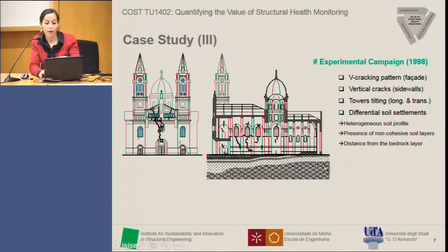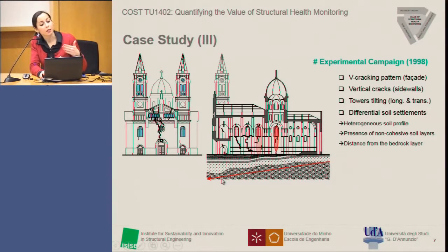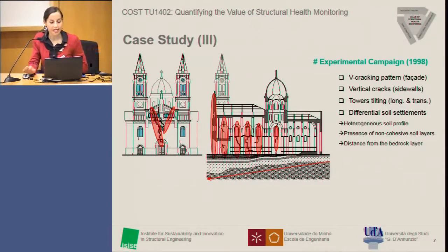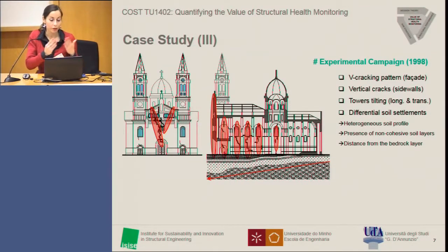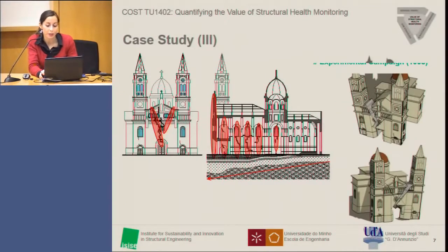In the apse and transept area, the bedrock layer is very close to the foundation, but it goes deeper and deeper while proceeding towards the front of the temple. This is causing a worsening of damage towards the facade of the church, and also causing a separation movement and tilting of the towers. In a long-term perspective, this situation can lead to failure of the system.